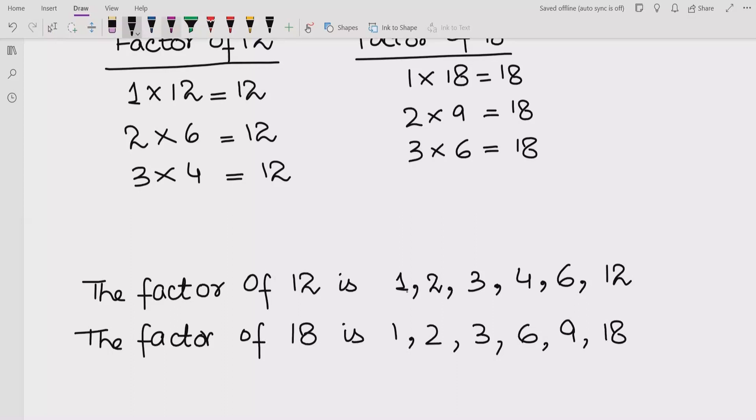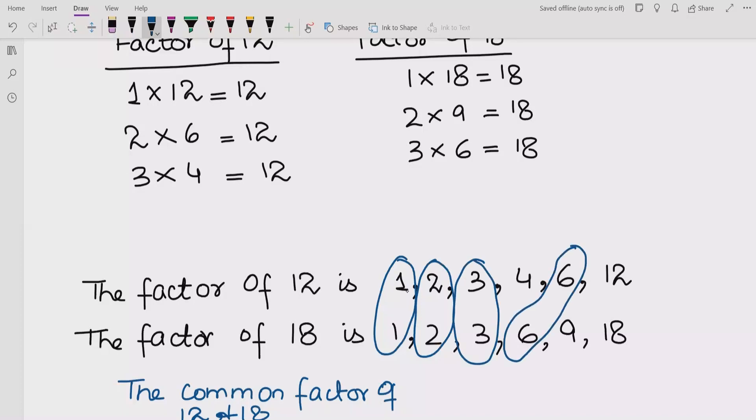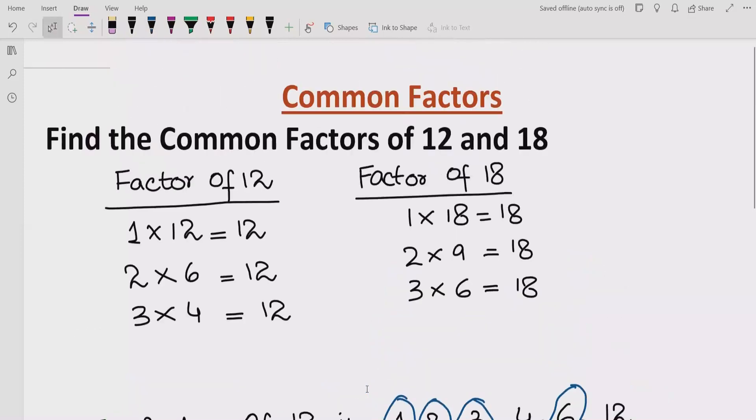Now we have to find what are the common factors of this. So the common factors of both 12 and 18 are 1, 2, 3, and 6. So these are the common factors of this question. I hope you understand this question.